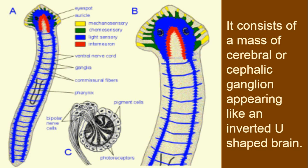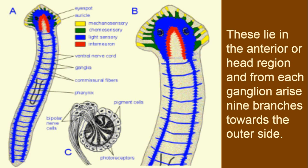This is called the cephalic ganglion or cerebral ganglion. It lies in the anterior or head region, and from each ganglion arise 9 branches towards the outer side. From this inverted U-shaped ganglion, nerve fibers are visible going outward — 9 on one side and 9 on the other side — a total of 9 pairs of branches going outward.